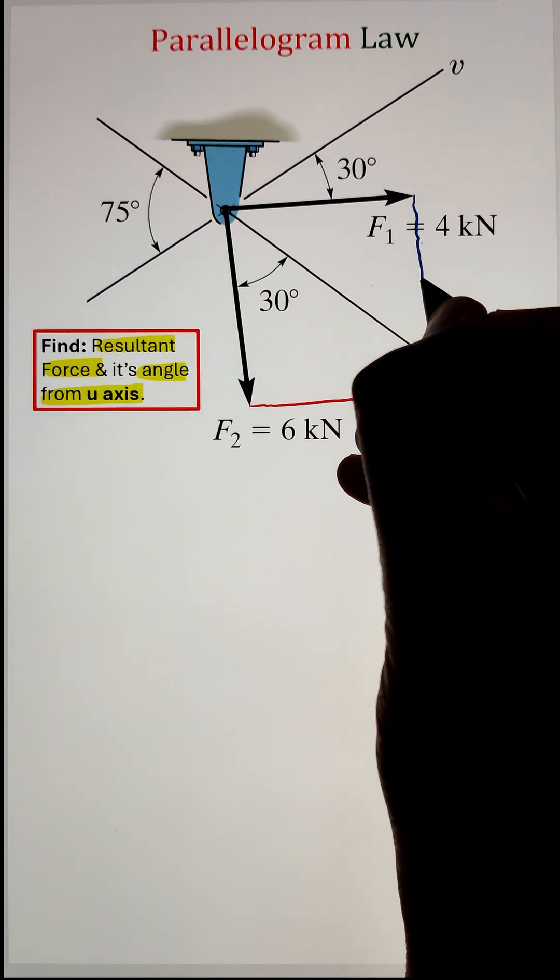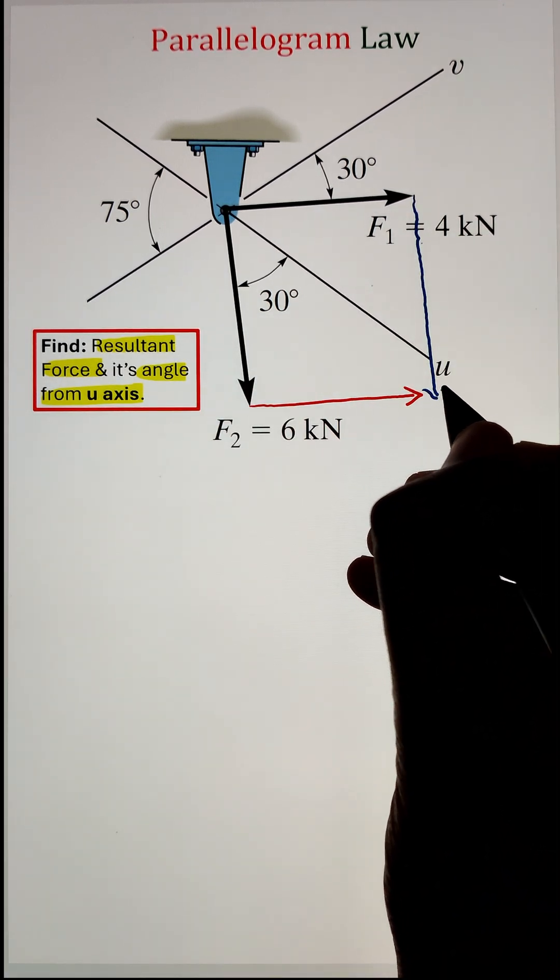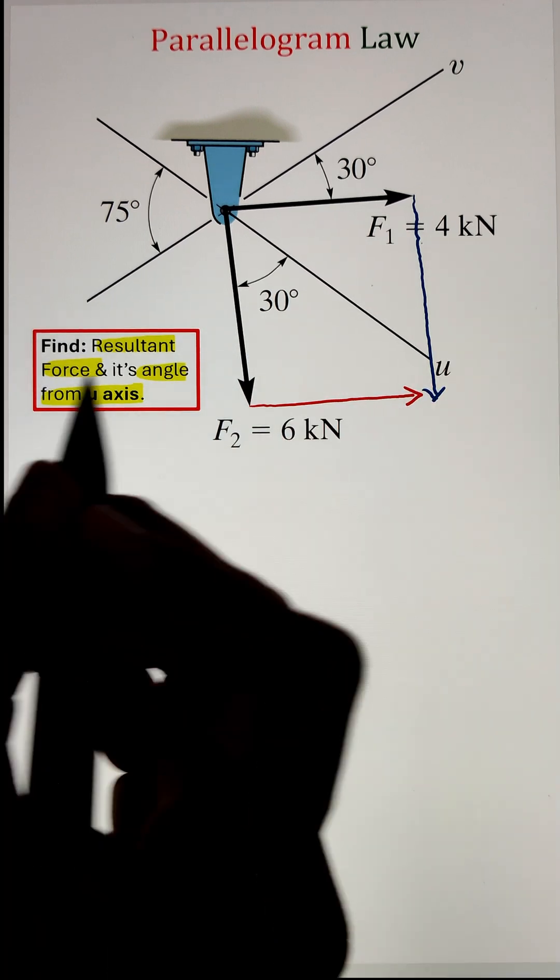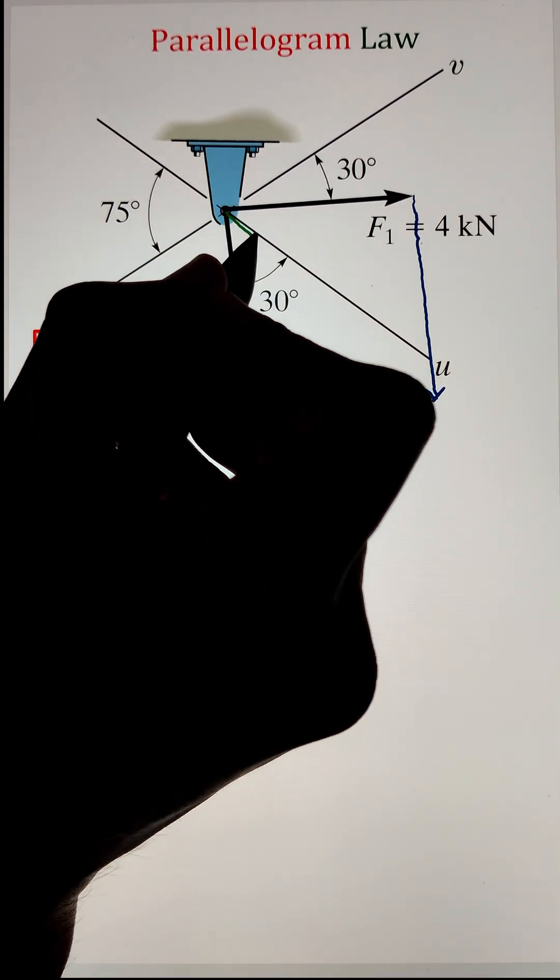Similarly, F2 needs to be translated to the head of F1. This creates a parallelogram. Now, the diagonal of this will give us our resultant force.